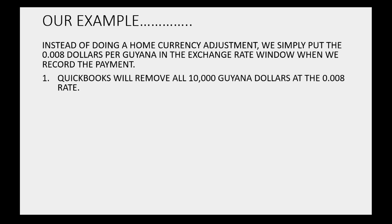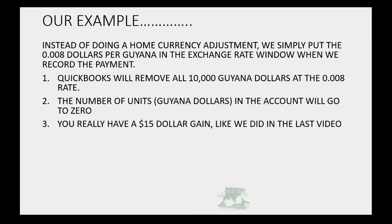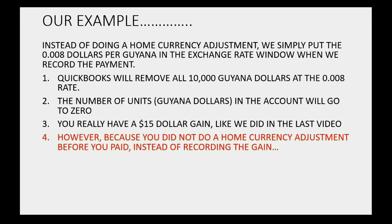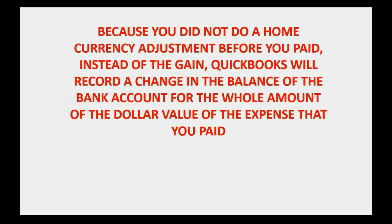QuickBooks will remove all 10,000 of the Guyanese dollars, so you will have zero units of the currency in the account, but they will be removed at the rate of 0.008, not the rate they went in at. The number of Guyanese units goes down to zero, and in reality you have a $15 gain like we did in the last video. However, because you did not do a home currency adjustment before you paid, instead of recording the gain, QuickBooks will record a change in the balance of the bank account for the whole amount of the dollar value of the expense that you paid. That's the crucial point.